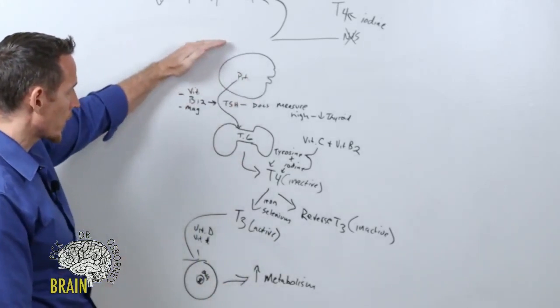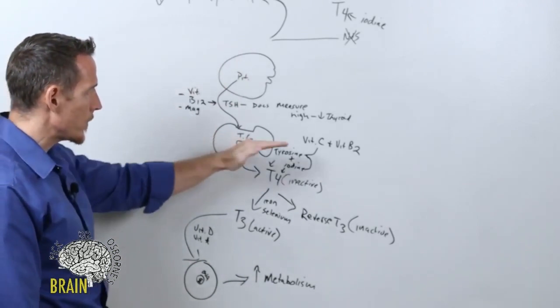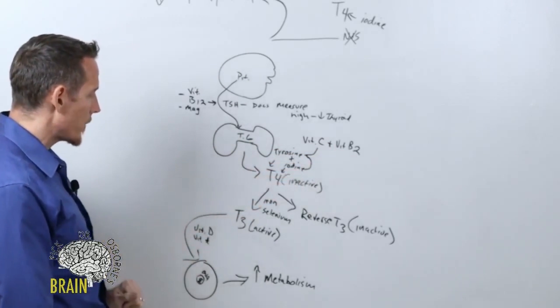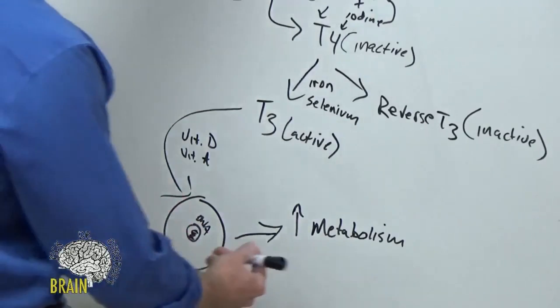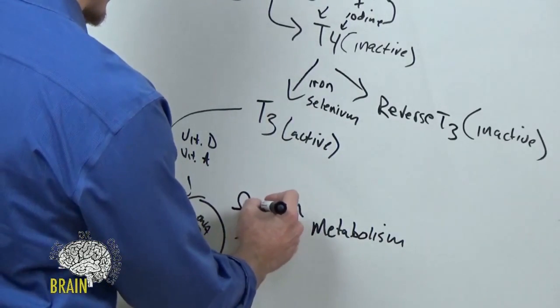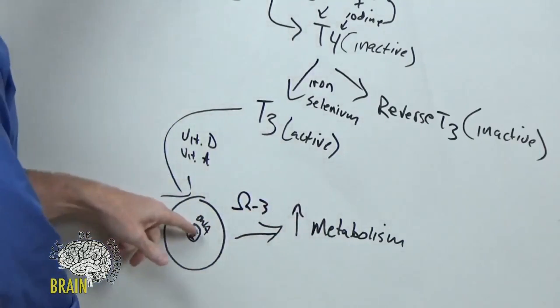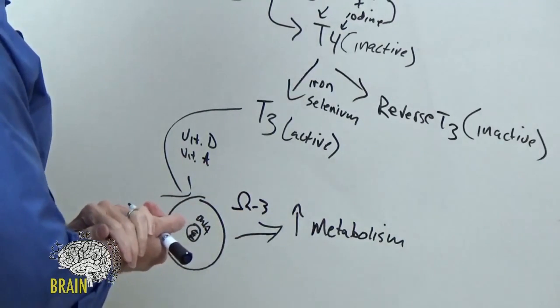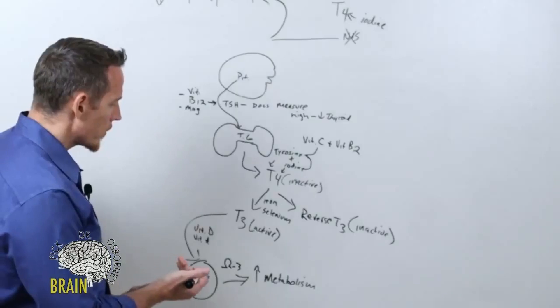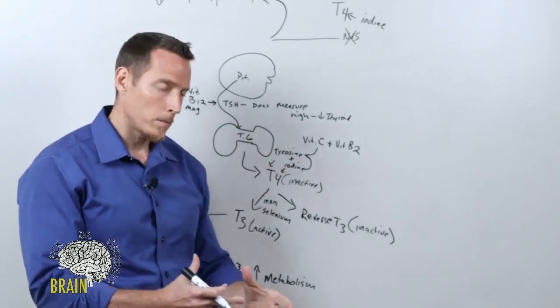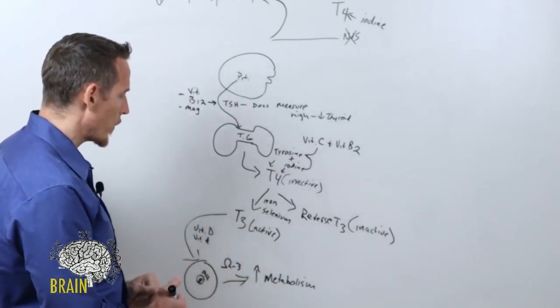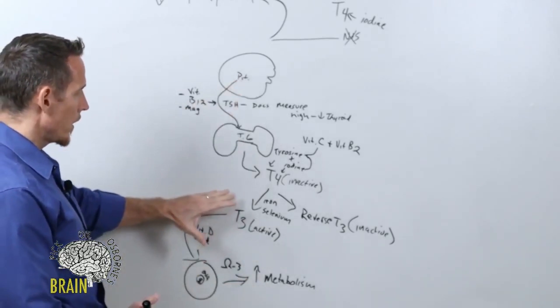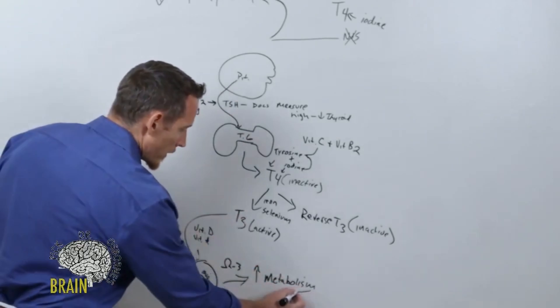So this is what I mean by nutritional low thyroid. We've got B12, magnesium, vitamin C, vitamin B2, tyrosine, iodine, iron, selenium, vitamin D, vitamin A - all necessary. We can add another one here and that's omega-3 fatty acids, because to drive that metabolism after the fact of thyroid talking to the DNA requires omega-3 fatty acids. So if you don't eat a lot of cold water fish, and if you're vegetarian and you don't eat a lot of meat, it can be very challenging to get adequate quantities of omega-3 fatty acids in the diet. Again, these nutrients are all necessary to get to what we're trying to do, which is increase metabolism.